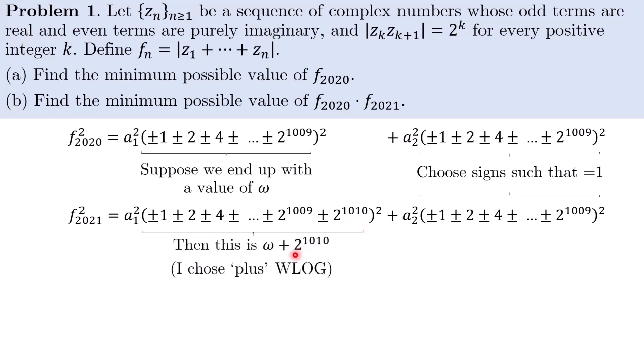Without loss of generality, I'm going to choose this to be a plus because I can always flip the sign of everything, flip the sign of omega and omega squared will still be the same value. So I'm going to simplify the notation by just choosing the plus term here.